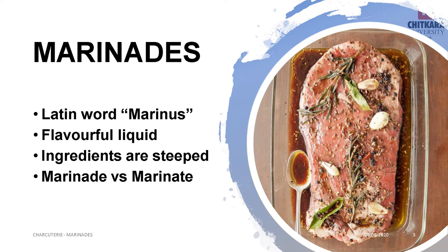Other foods marinated in Scandinavia include pickle, tongue, ham and mackerel in white wine. And in India, many ingredients are marinated in spice and spiced curd mixture. And in Peru, raw fish is marinated in lemon juice. So by this, we can understand that the process of marinating food is quite common throughout the world.